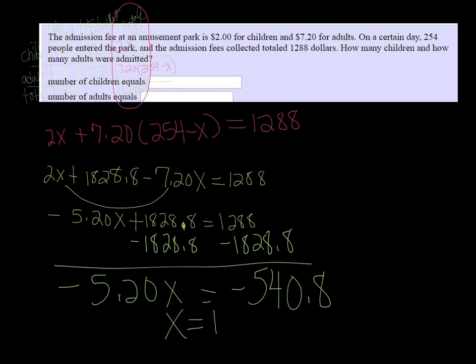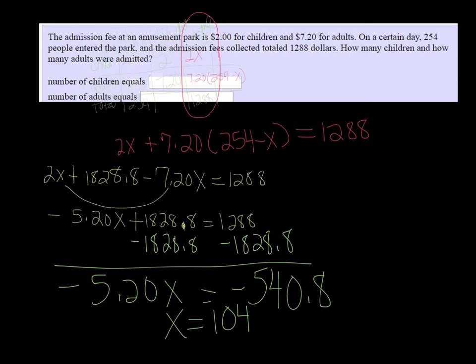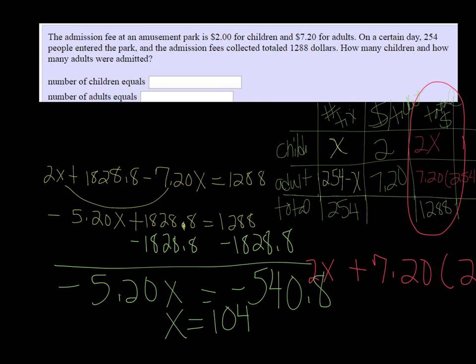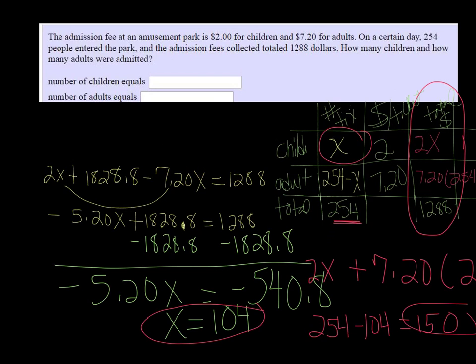So we sold 104... Well, let me see if I can grab that table back. Now, the X represented our number of children tickets, so we sold 104 children. There was 254 altogether, so if I do 254 minus 104, that's going to be 150 adult tickets. So 104 children, and 150 adults.